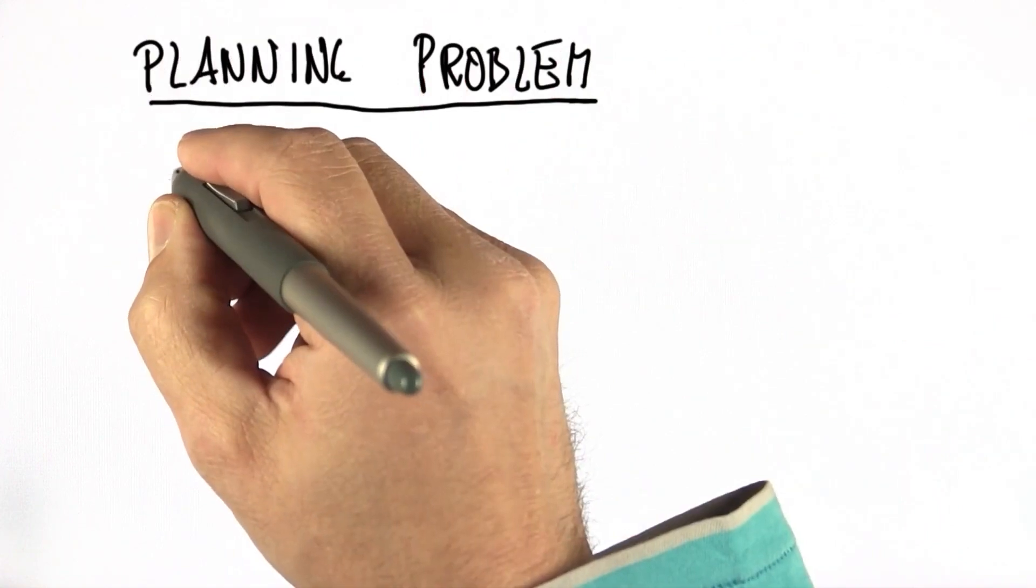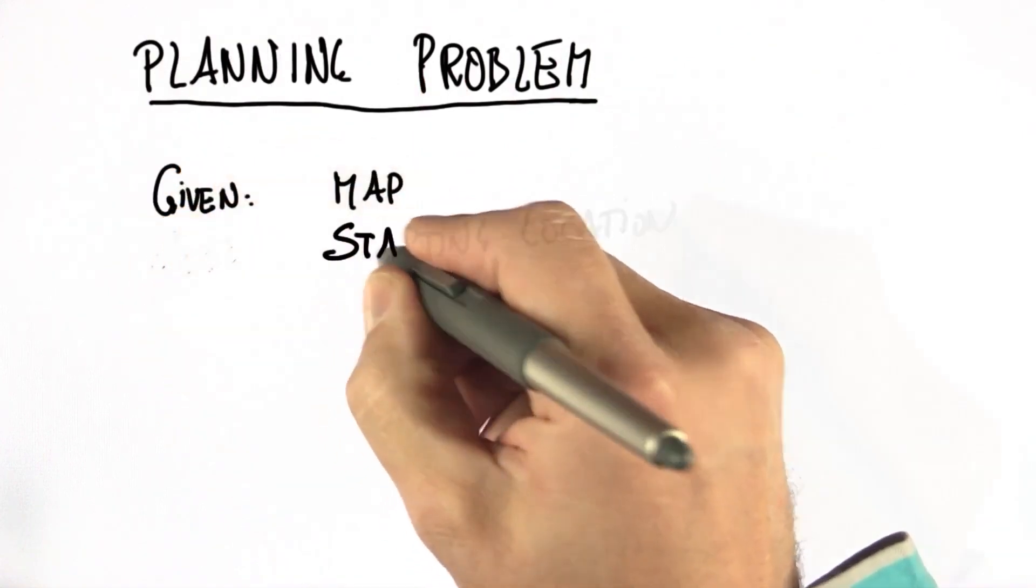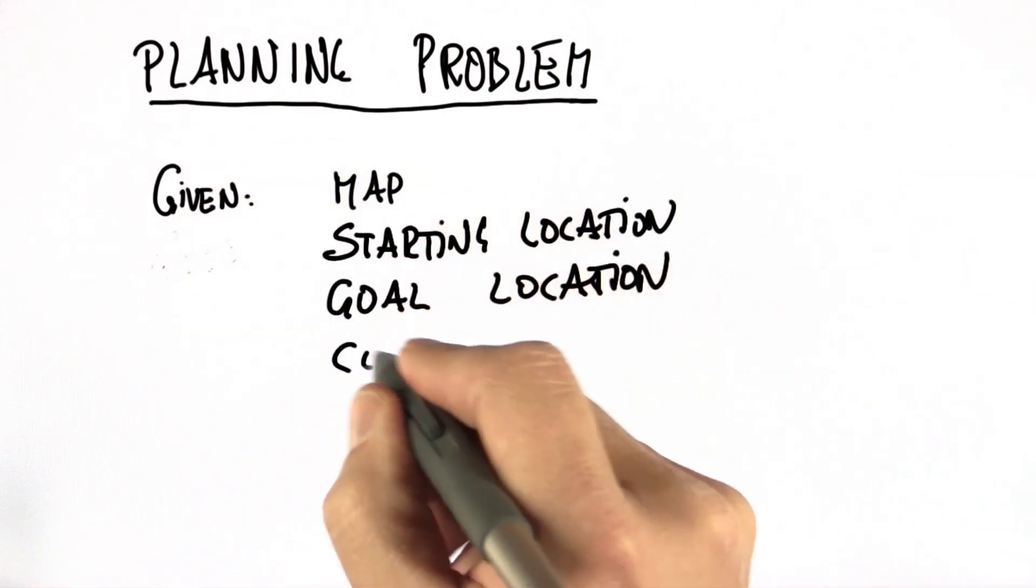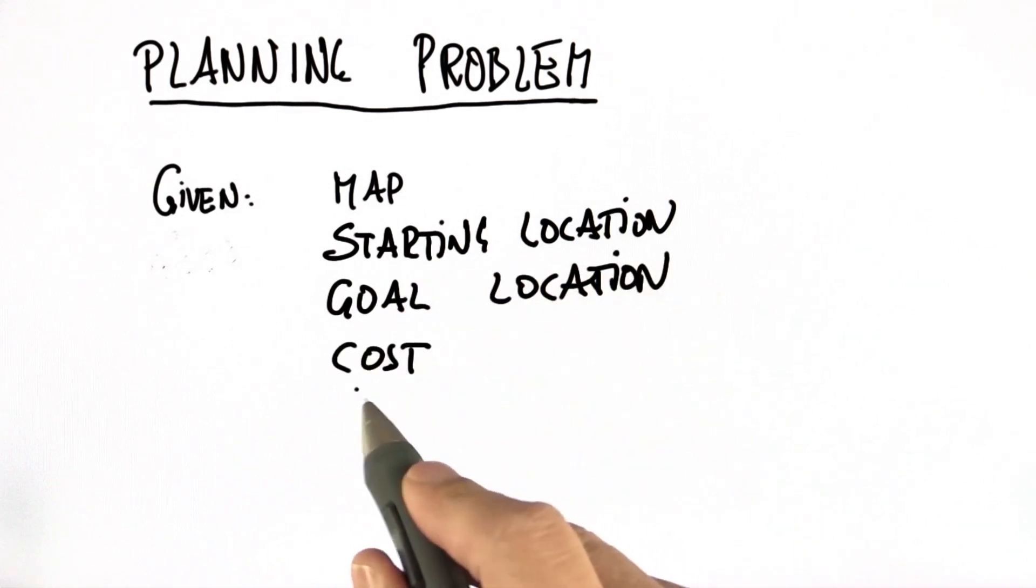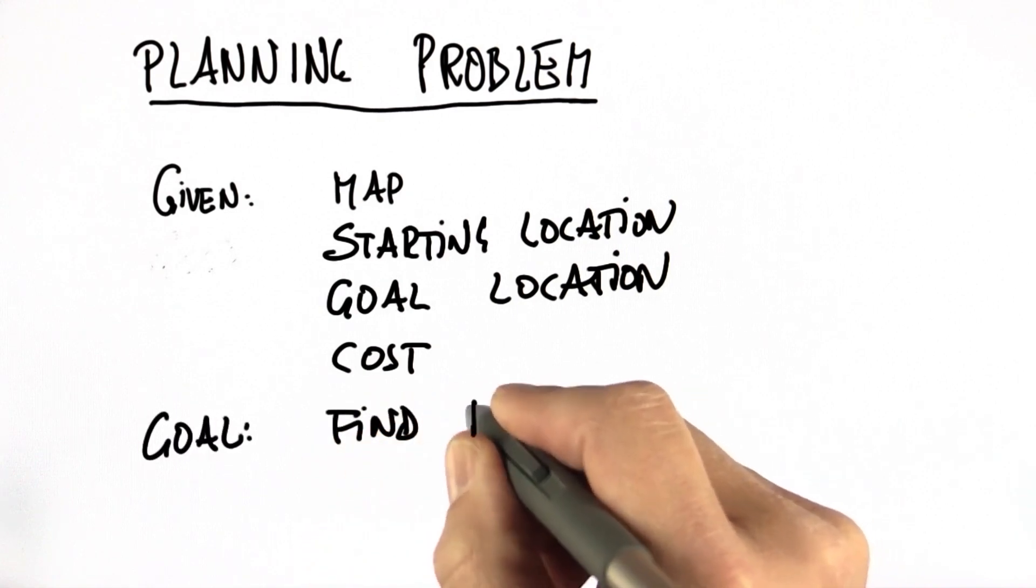So what's the planning problem? We're given a map of the world, a starting location, a goal location, and usually some sort of cost function. In the simplest way, think of cost as just the time it takes to drive a certain route. And the goal is to find the minimum cost path.